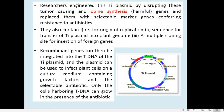Researchers have isolated the Ti plasmid from Agrobacterium tumefaciens and incorporated some changes so that it can be used as a vector for transferring foreign genes into dicot plant cells. The Ti plasmid was engineered in such a way that the tumor causing genes were removed and the opine synthesis genes were removed, so there will be no induction of tumor in the host cell.